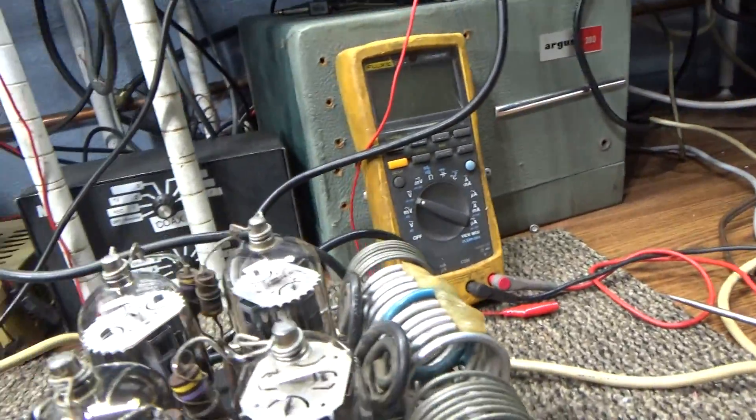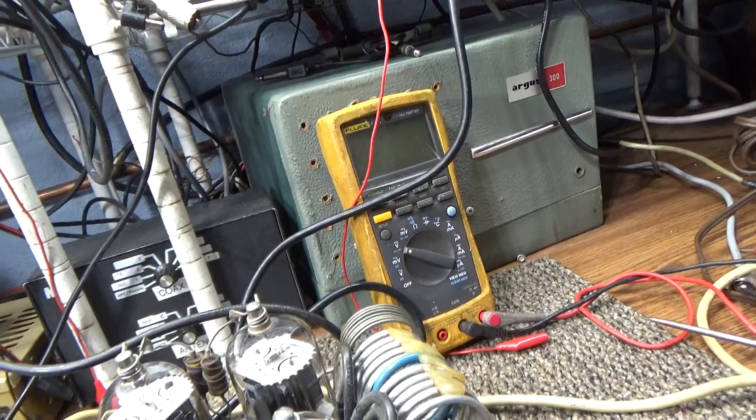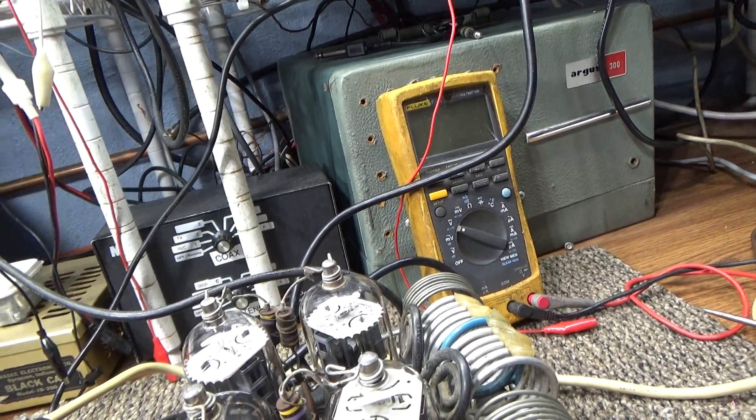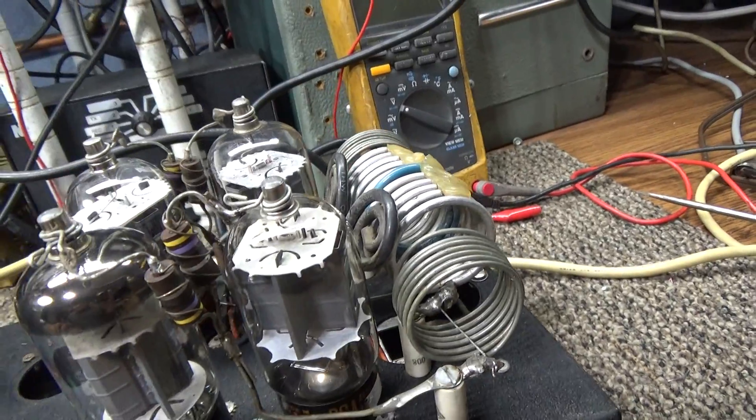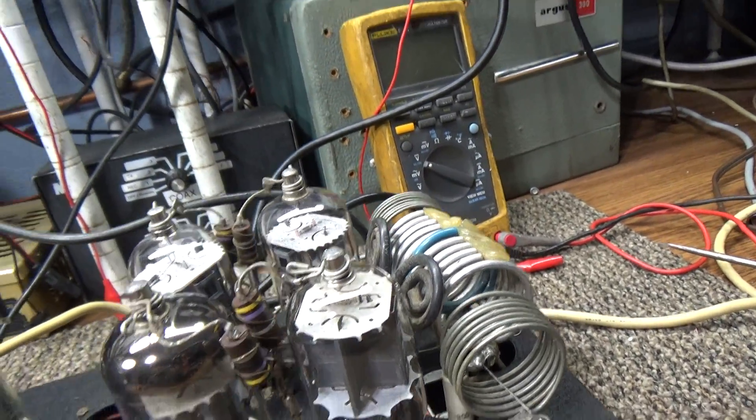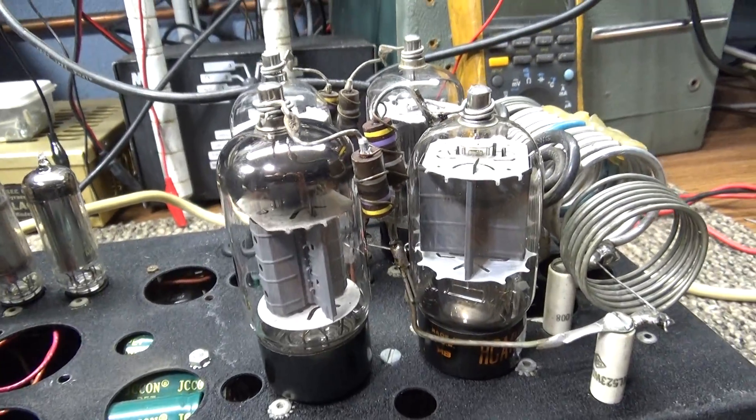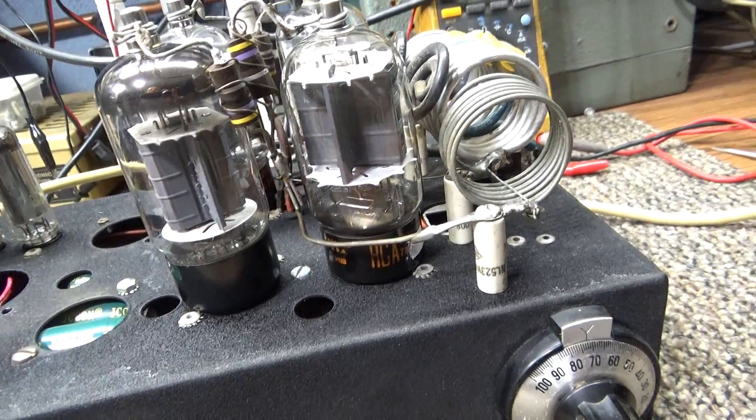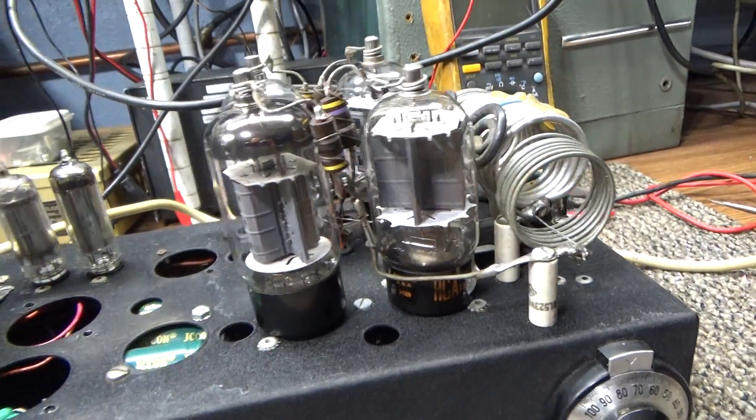I replaced them with what I thought was good ones I bought off eBay and learned something new. A 12DQ6A is different from a 12DQ6B and they're not really interchangeable. So the A's I bought were no good, so I bought some B's.